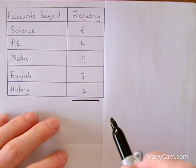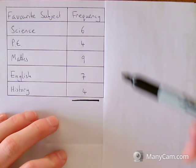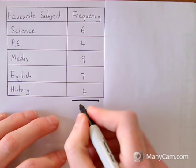The first task when we're going to draw a pie chart is to work out how many people took part in this survey. So I'm going to add up the frequency column here. When I add these together I get a total amount of 30 people who took part.